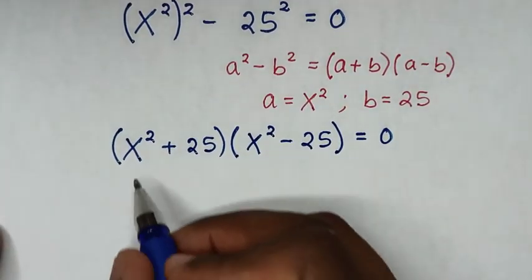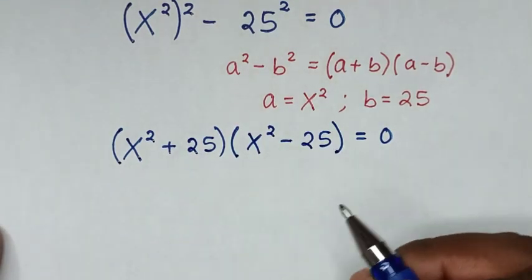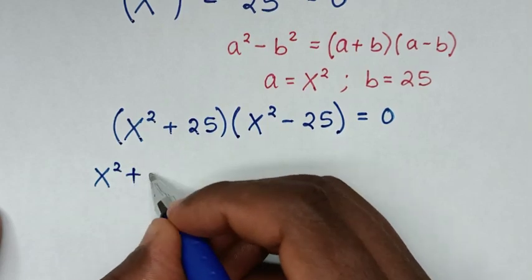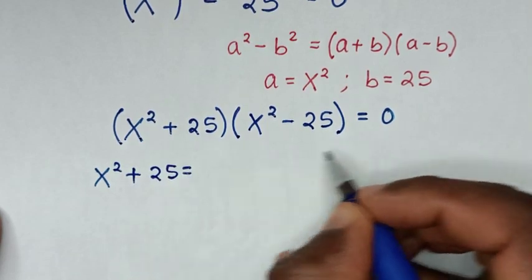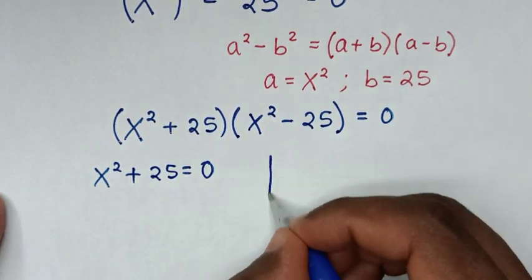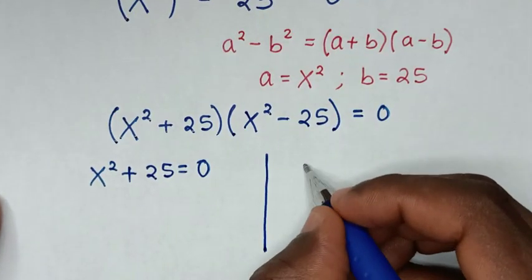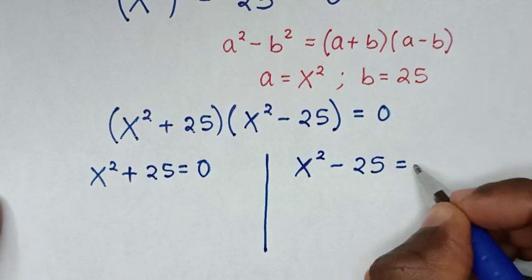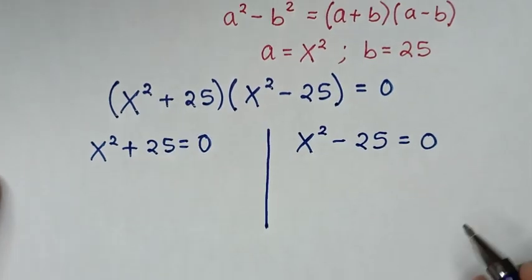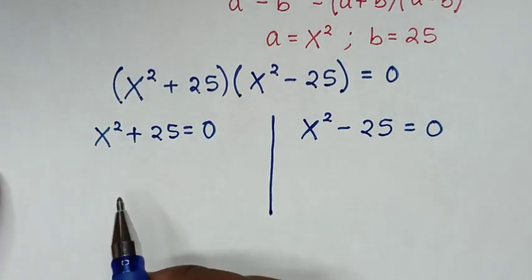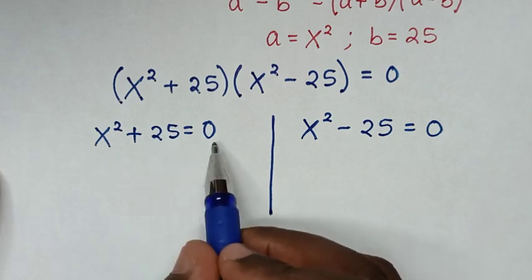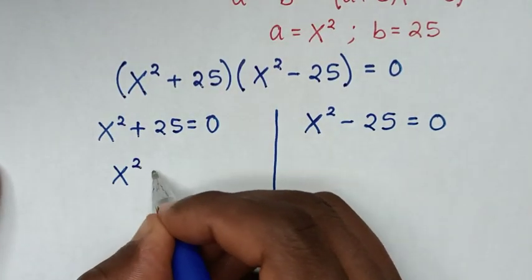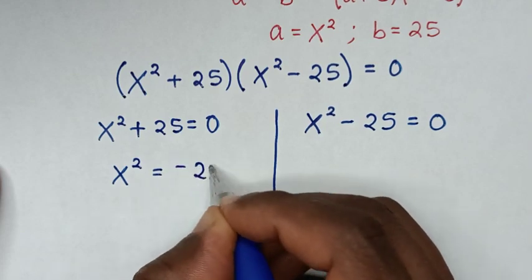From here we have two solutions. The first solution is x squared plus 25 equals 0. To solve this, we take 25 to the right side, giving x squared equals negative 25.